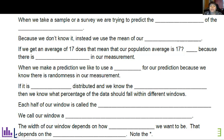Now what is the point of this? When we take a sample or a survey or even do an experiment, we're trying to predict the mean for a population. Because we don't know it, instead we use the mean for our sample. Now if we get an average of 17, does that mean our population average is 17?